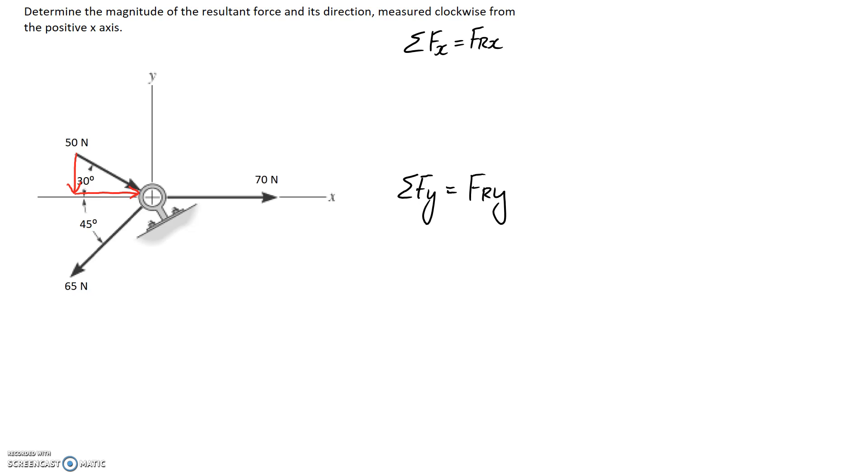The x part is going to be this horizontal bit and it's going to be the adjacent side, so it's going to be 50 cos 30, remembering that this is always going to be a right-angled triangle. We need to think about whether it's pointing in the positive or negative x direction, and you can see this is pointing in the positive x direction so we're going to leave it as positive in the equation.